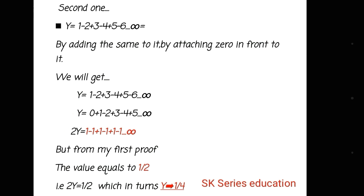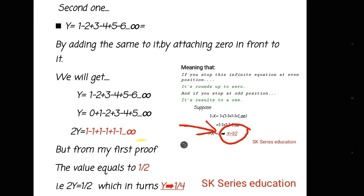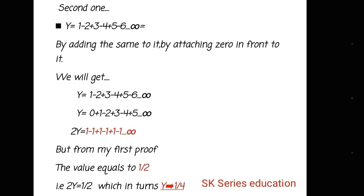1 + 0 = 1, -2 + 1 = -1, so it results to the value which I have previously done. The value is equals to 1/2. That means 2Y = 1/2, Y = 1/4. I finally reached out to my proof.